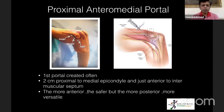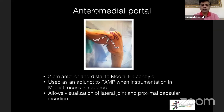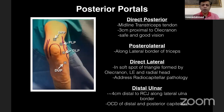The proximal anteromedial portal is the first portal I create, about two centimeters proximal to the medial epicondyle and just anterior to the intermuscular septum. The more anterior you are, the safer you'll be because you're away from the nerve. The more posterior or closer to the septum, the more versatile the portal in terms of vision and working space. The anteromedial portal is two centimeters anterior and distal to the medial epicondyle, used as an adjunct when instrumentation in the medial recess is required.